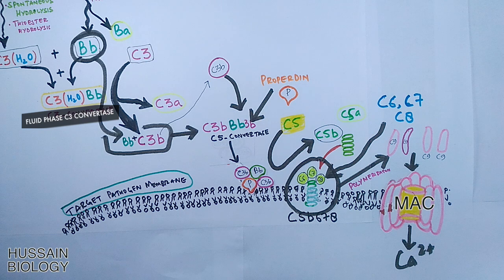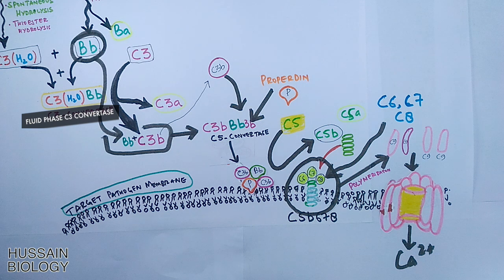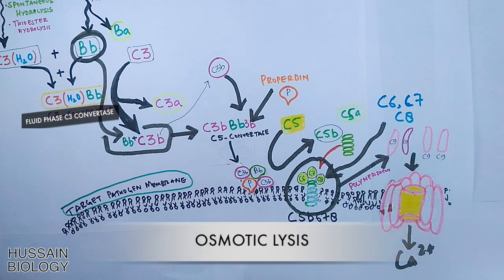And through this membrane attack complex or through this pore, many electrolytes are getting exchanged without any regulation and ultimately cell loses its electrolyte balance and there is an osmotic lysis of pathogen cell. So this is how the alternative pathway without any help from antibodies works within our body to combat these pathogens.